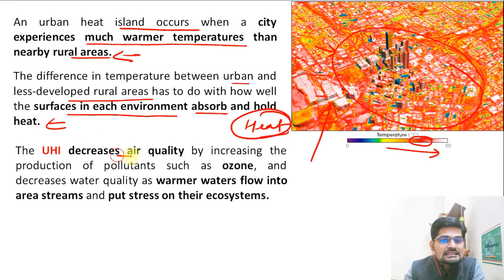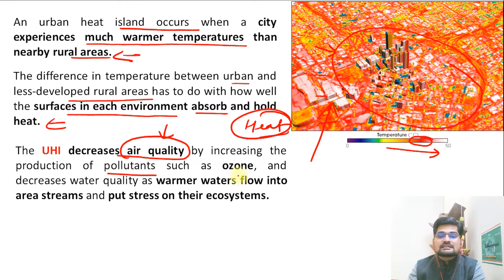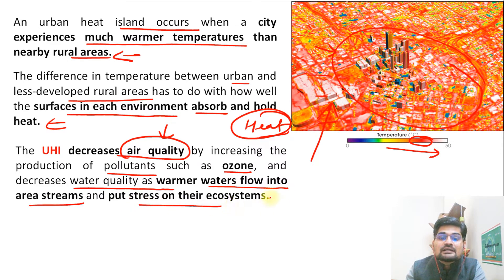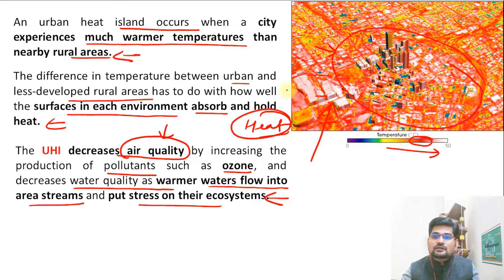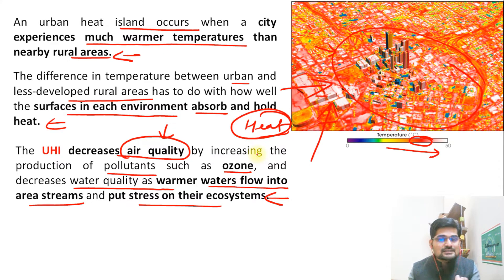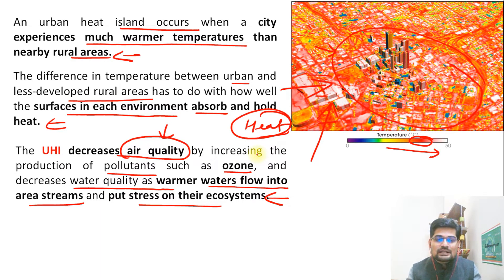Urban heat islands decrease air quality by increasing production of pollutants such as ozone, decrease water quality as warm waters flow into area streams, and put stress on both urban and adjoining ecosystems. The heat generated by the built-up area — concrete infrastructure like buildings, roads, and flyovers — means the soil part is absent. Concrete structures have the tendency to absorb more heat and then release it, creating this island of heat with negative impacts on air quality, water quality, and the entire ecosystem.